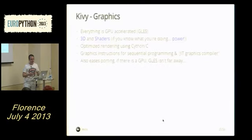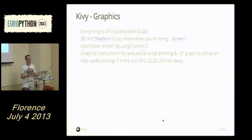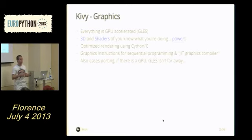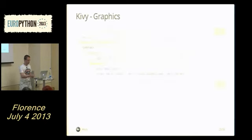The graphics part is heavily optimized in Cython. We try to reduce as much as possible the GPU instruction count because even on a mobile GPU, too many instructions will slow things down. We have optimization logic around it.